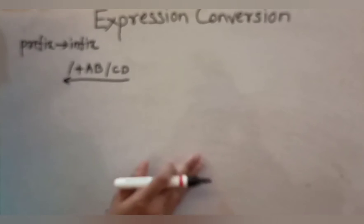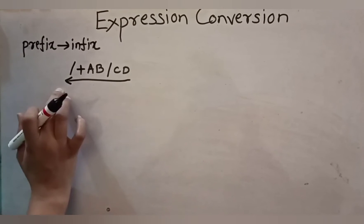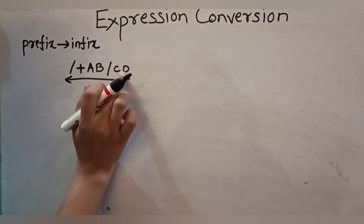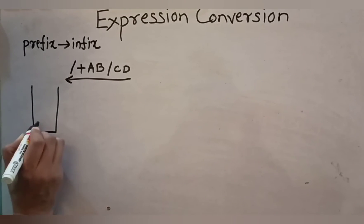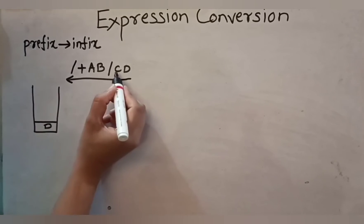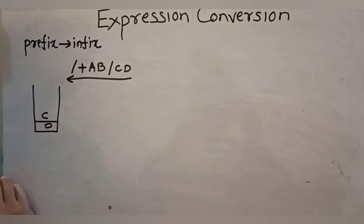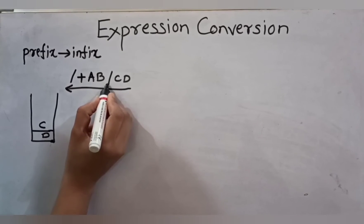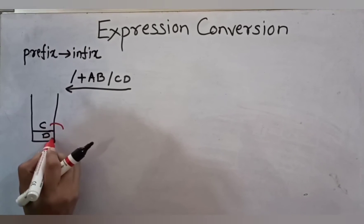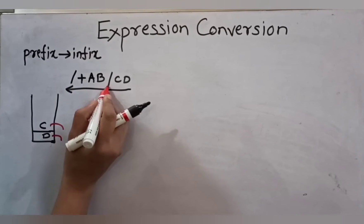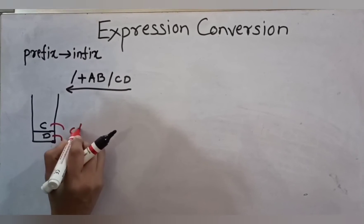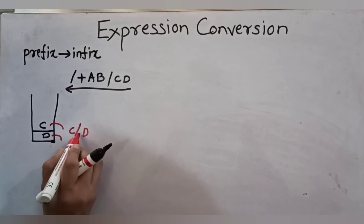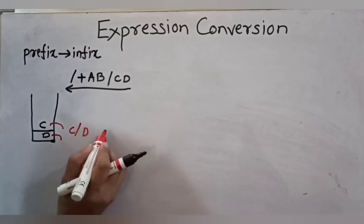Scanning from right to left, the first character is D — an operand — so we push it onto the stack. Next is C, also an operand, so push it onto the stack. Next is the division operator. Whenever an operator comes, we delete the topmost two operands from the stack. So C and D are deleted, and along with the division operator we form the combination C slash D. This is the infix format, with the operator in between the operands, and this result is pushed back onto the stack.